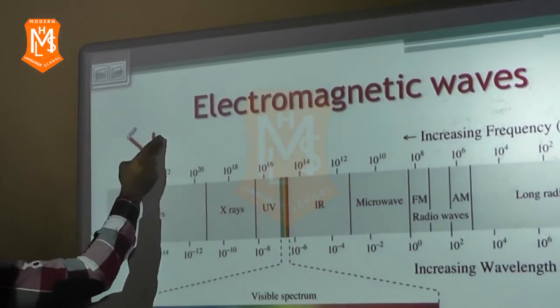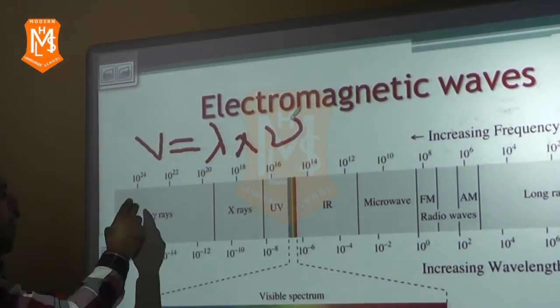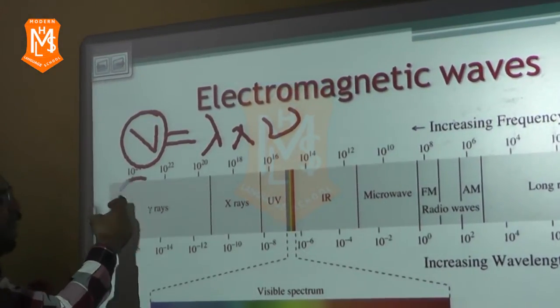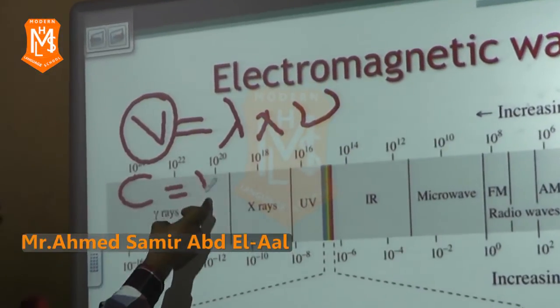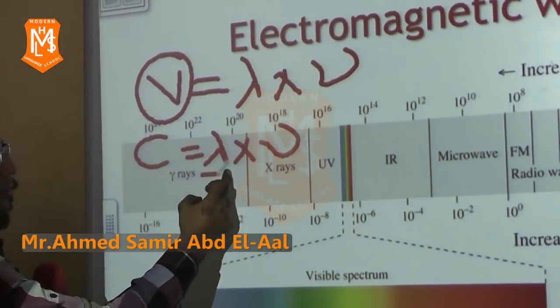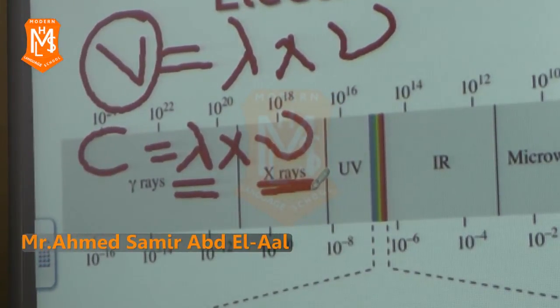v = λ × frequency. The velocity of light in space is constant, denoted by c = λ × frequency. So the relation between lambda and the frequency is inversely proportional, as in this figure.